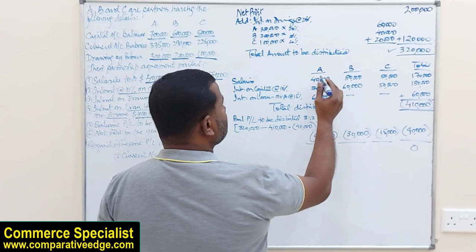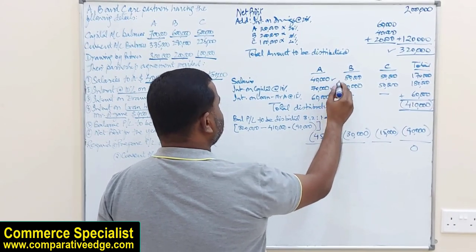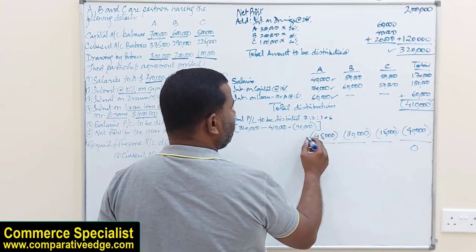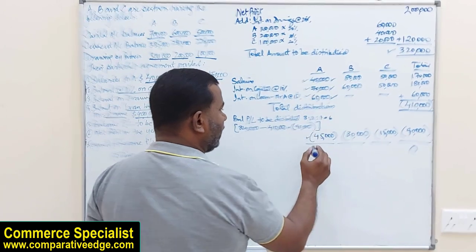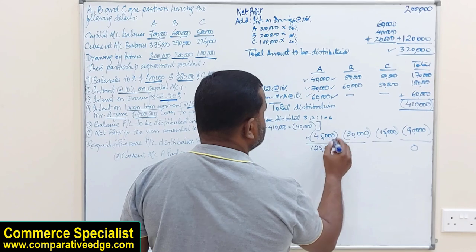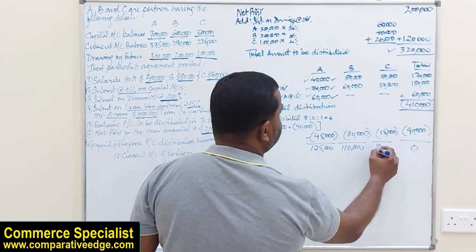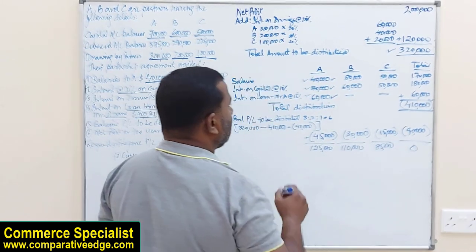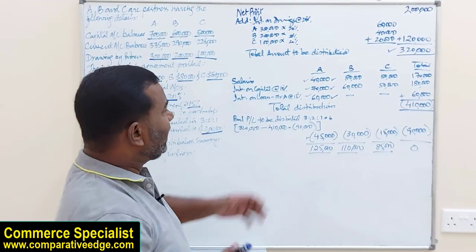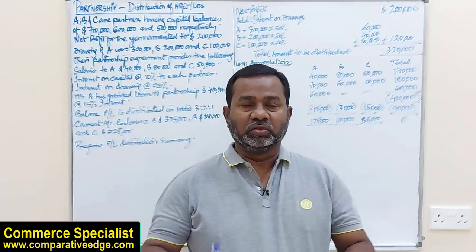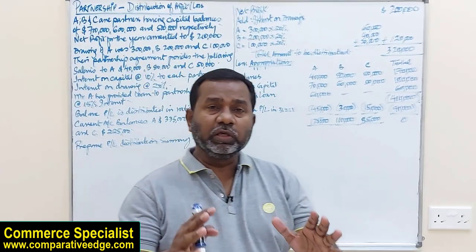So the final amounts each partner receives: A gets 40,000 salary plus 70,000 interest on capital plus 60,000 interest on loan, minus 45,000 share of loss, totalling 125,000. B receives 110,000 and C receives 85,000. This is what they are getting after distribution of loss. I've prepared the profit and loss distribution account — let me now give a summary so we can move on to the current account.